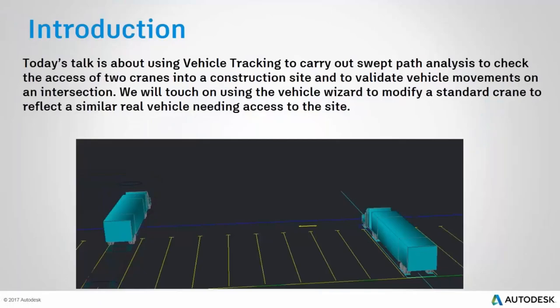Today's talk is about using Vehicle Tracking to carry out some swept path analysis of two cranes into a construction site and to validate the vehicles of a new intersection. The aim is to give you an introduction to using Vehicle Tracking on a couple of very common use cases. I'm going to use the vehicle wizard to change a standard library vehicle to meet the requirements of an actual physical construction vehicle.